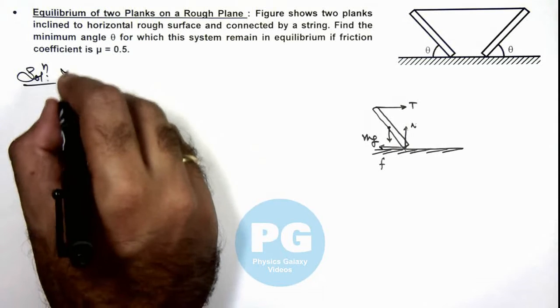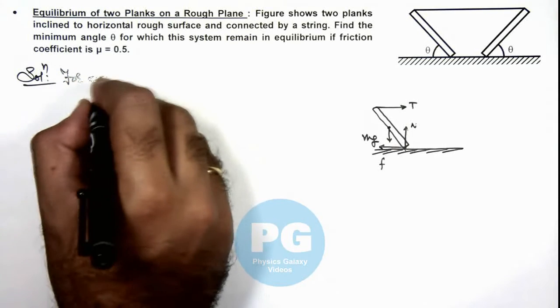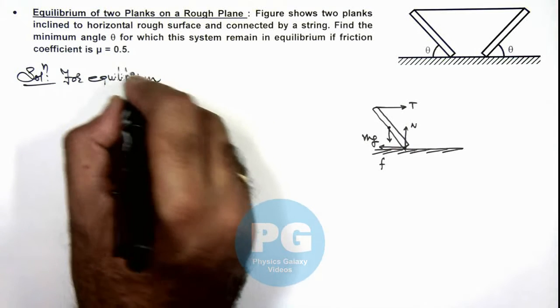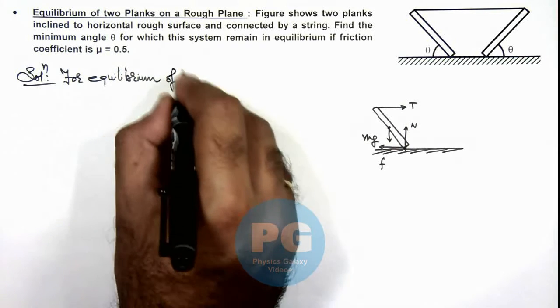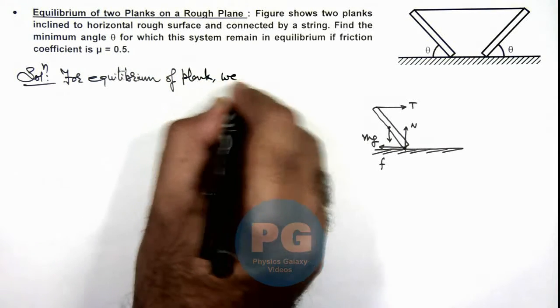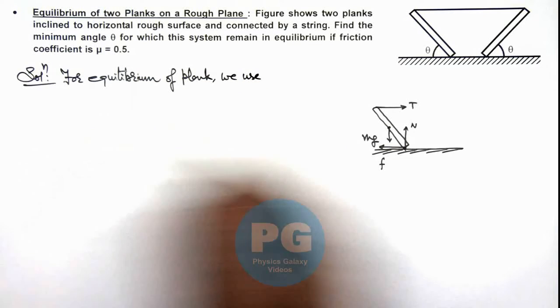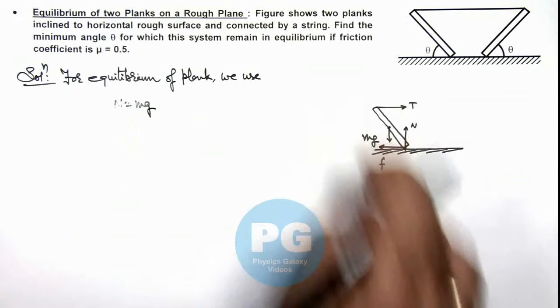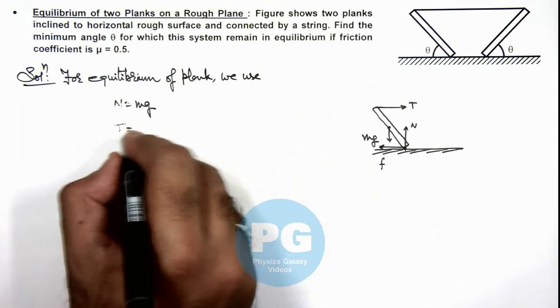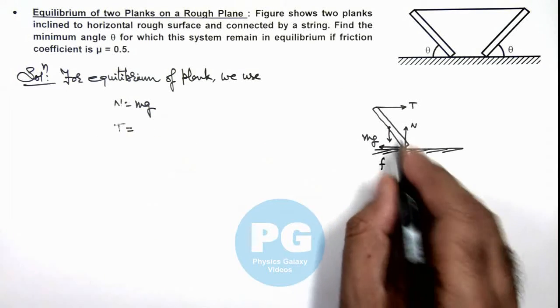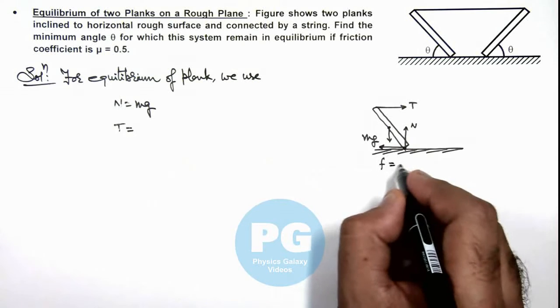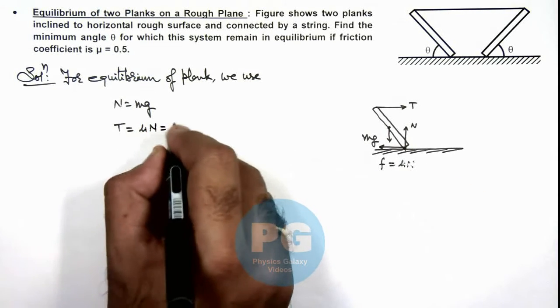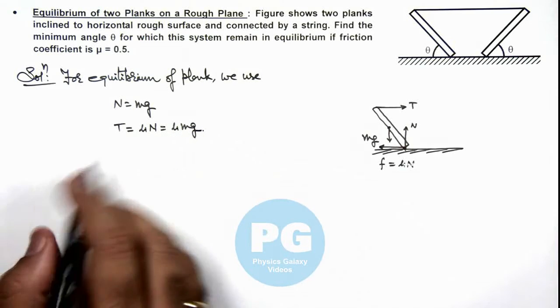And here we can write for equilibrium of plank, we use the value of N must be equal to mg in vertical direction and in horizontal direction tension must be equal to friction. And under limited equilibrium the value of friction must be μN, so this is equal to μmg as well as.